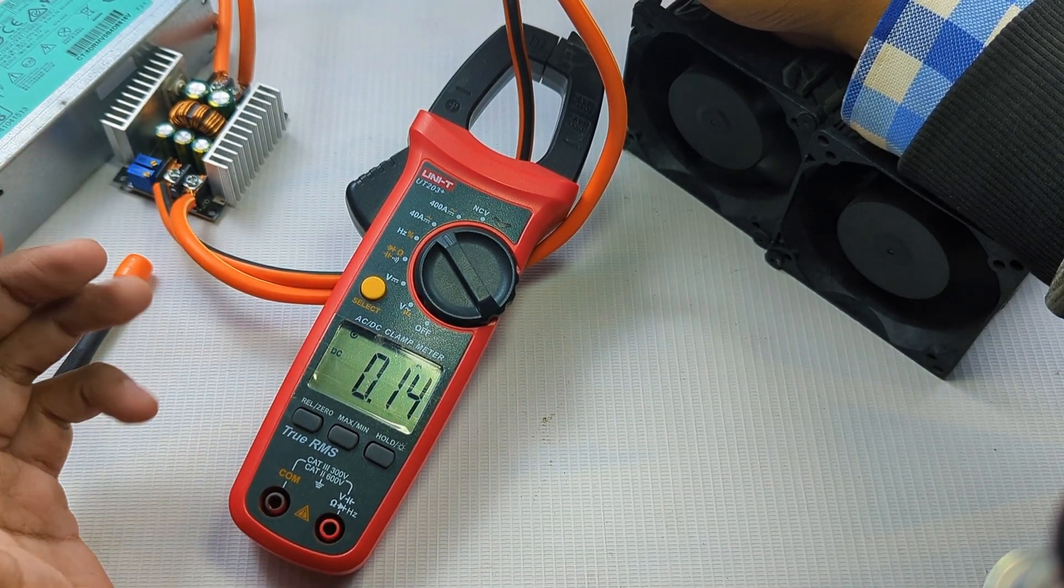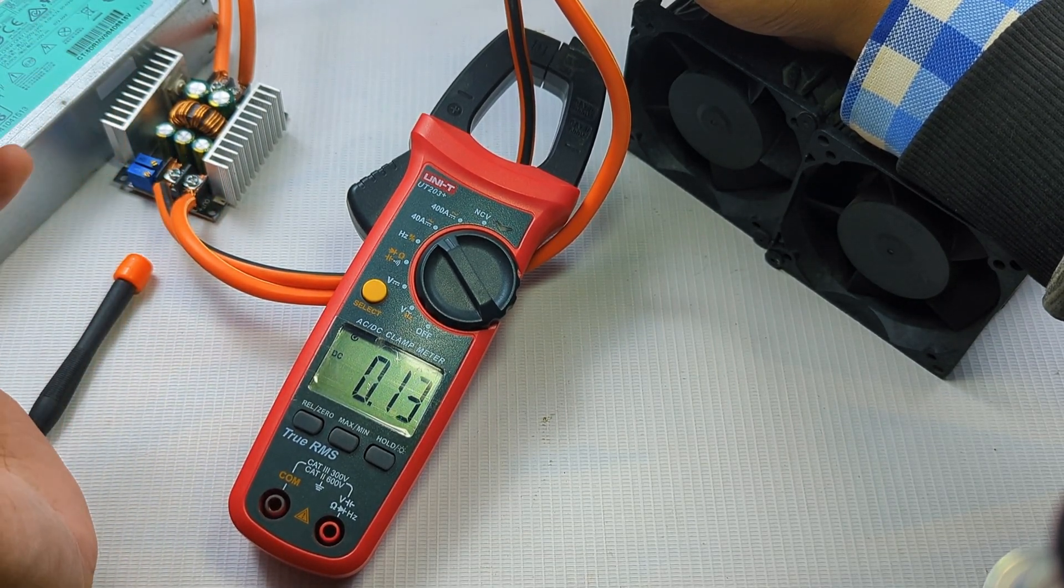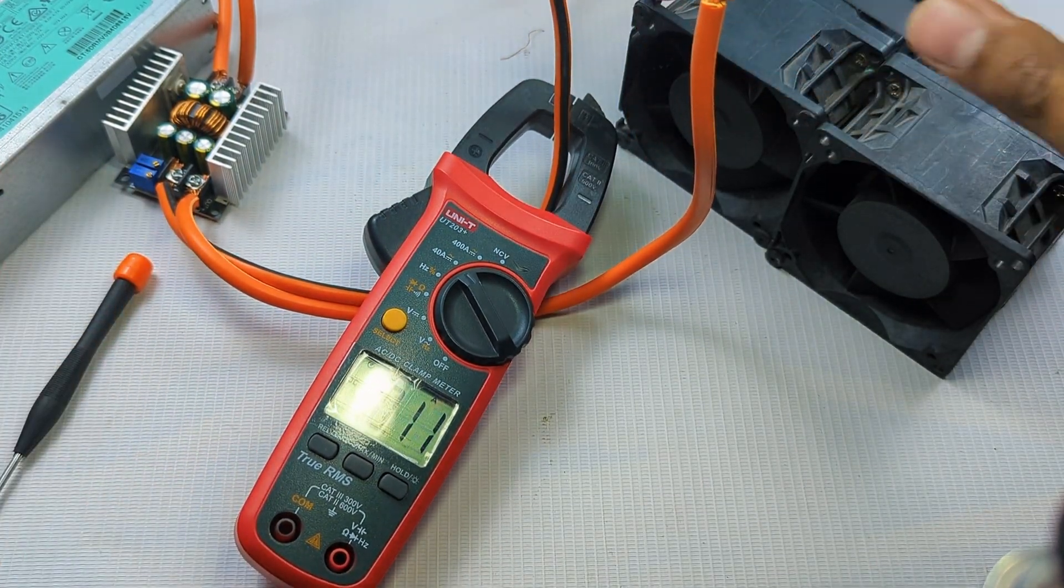So I cannot go more than that because this buck converter can handle only 20 amps. So I have turned this off. Now I will connect directly to the power supply and let's measure the amps.